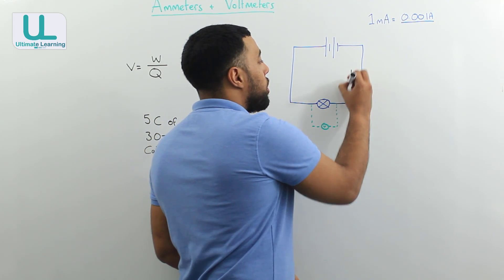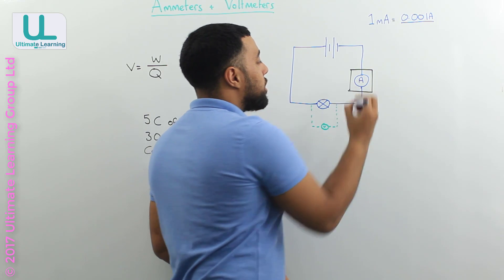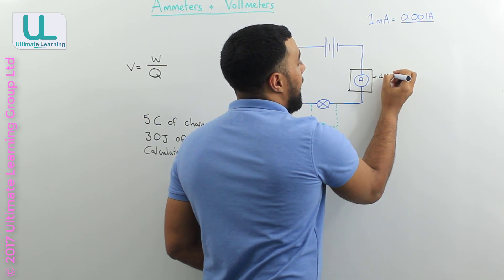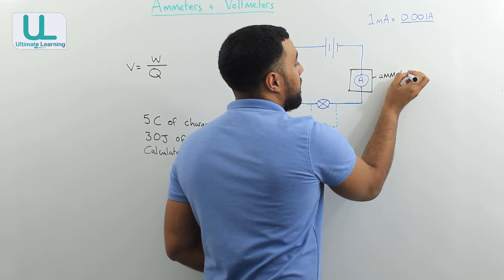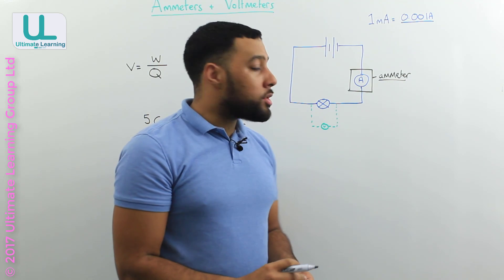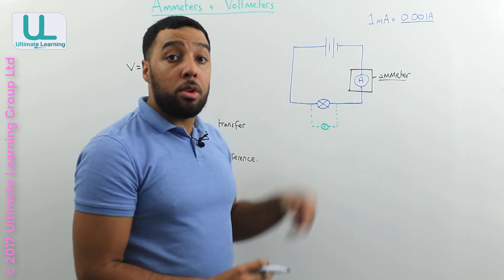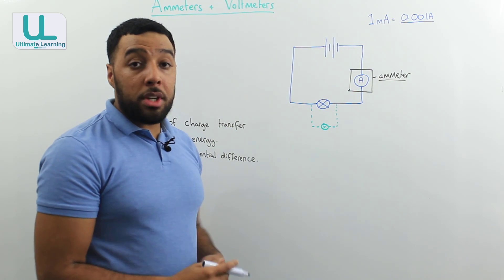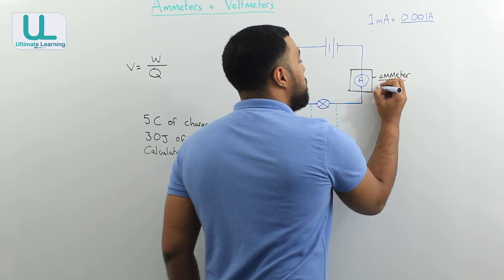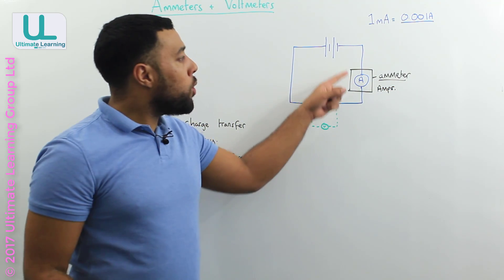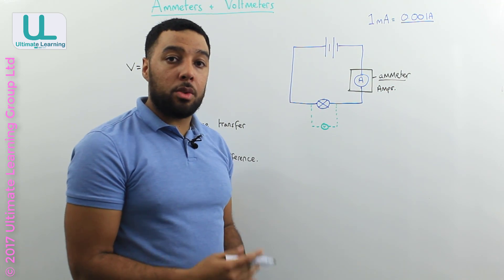Well, you should know that this component here is called an ammeter. An ammeter is there to measure the current going through a circuit. Ammeters will give us a reading in the unit amps, and the ammeter is always placed in series with the circuit.